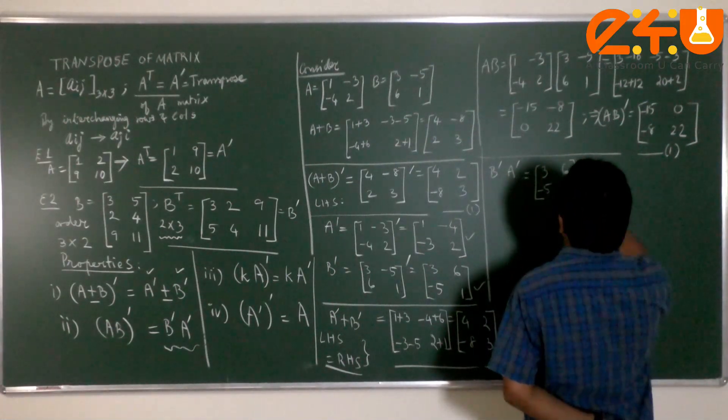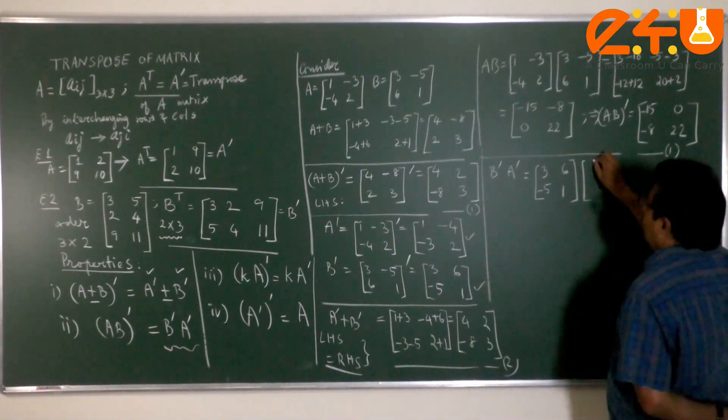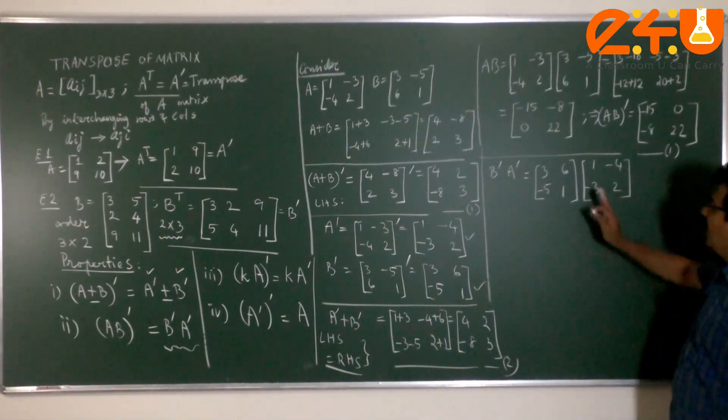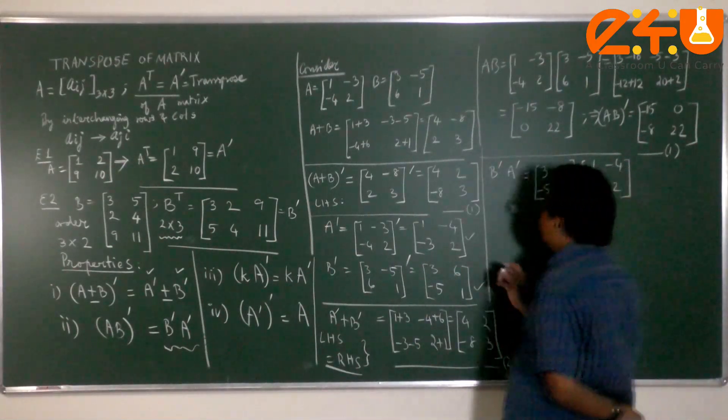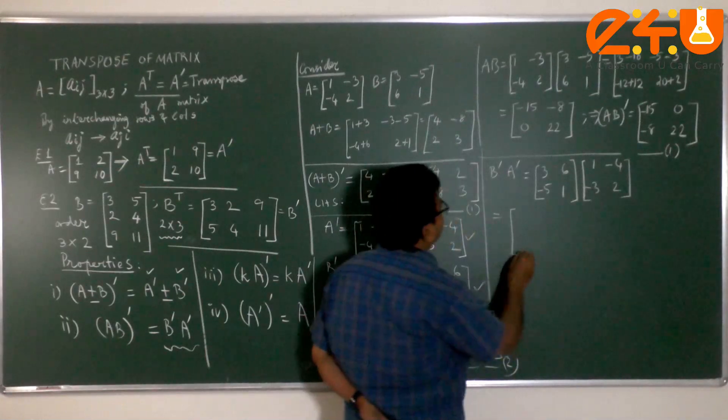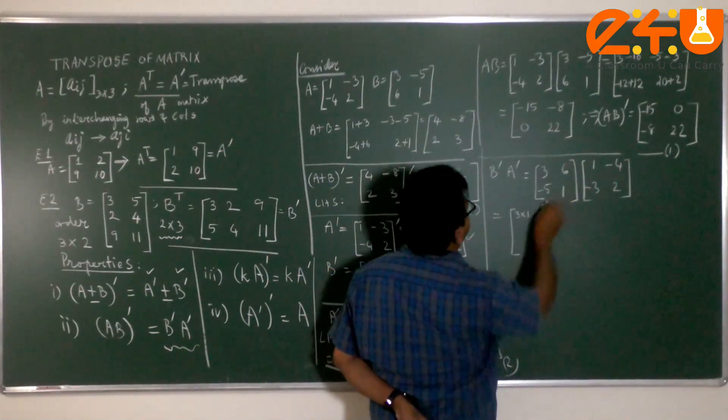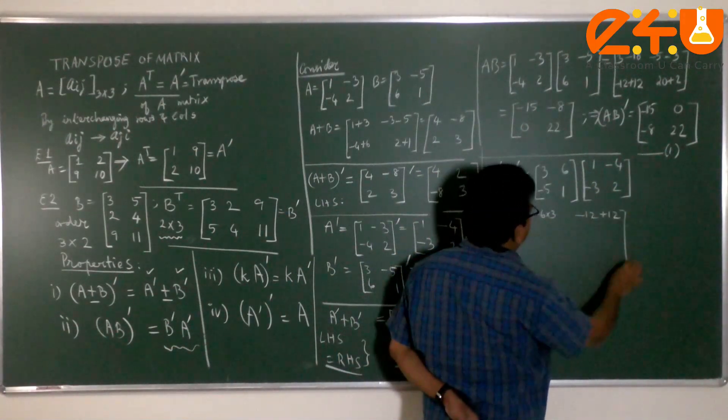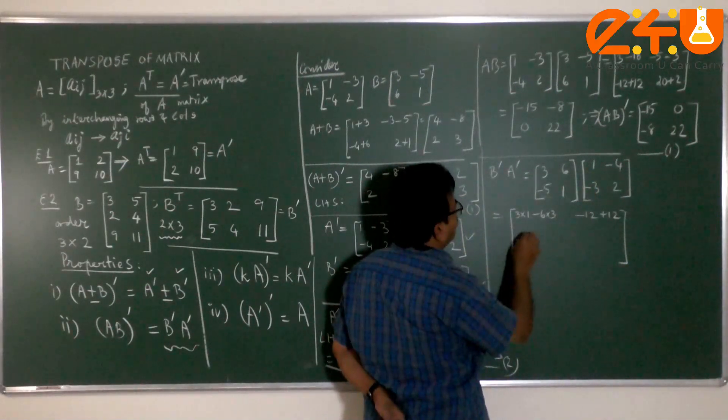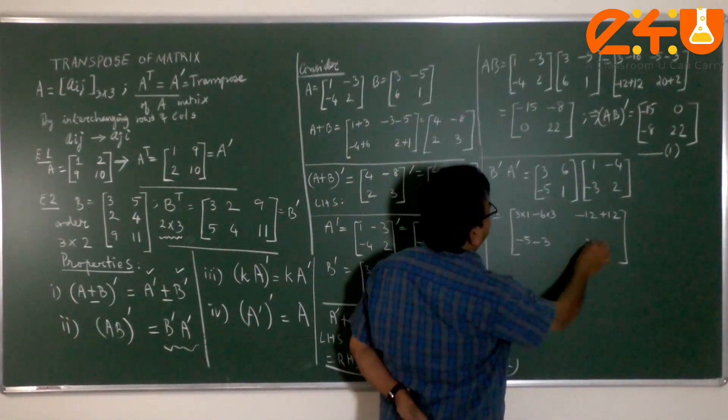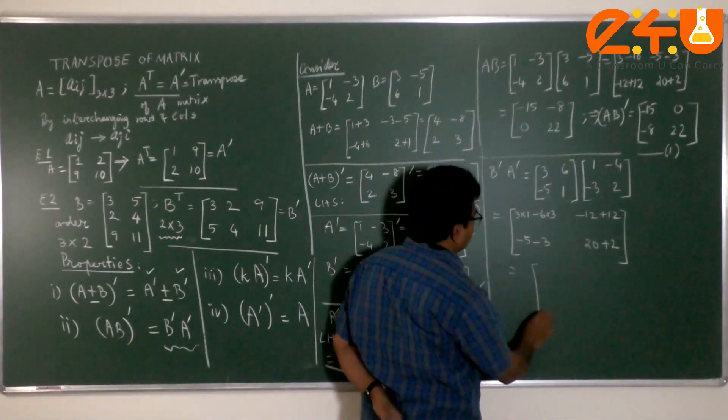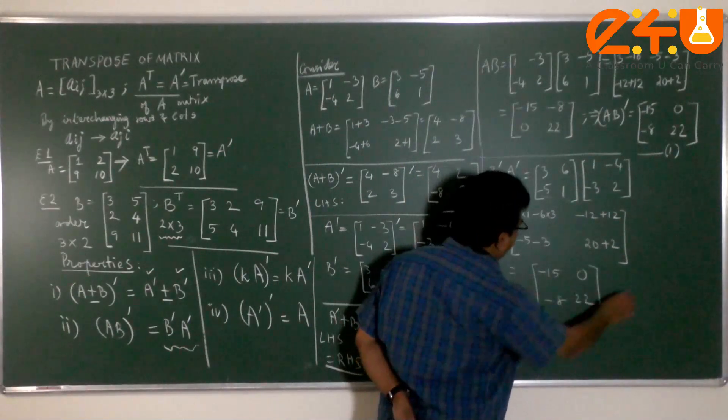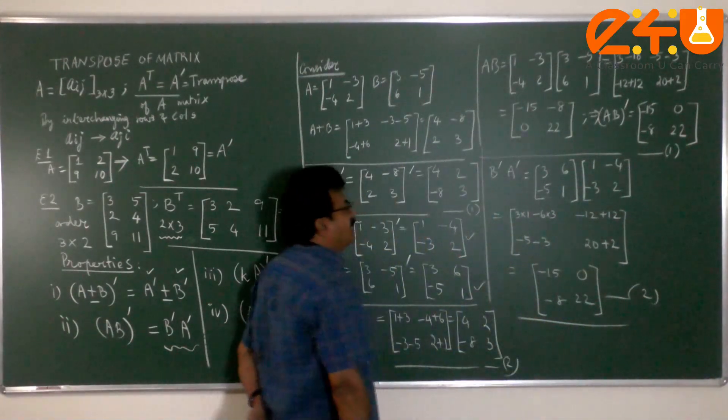3 minus 5, first column 6, 1, second column. 1 minus 3, negative 4 and 2. That is column 1, column 2 for A transpose. In that particular order, we are multiplying. Let us get the product. 3 times 1, minus 6 into 3. And first row, second column, negative 12 plus 12. Second row, first column becomes negative 5, negative 3. Followed by 20 plus 2. And the answer is 3 minus 18 gets you minus 15, 0, minus 8 and 22. And take that as result 2, the product B transpose, A transpose.